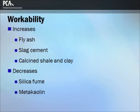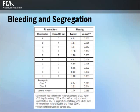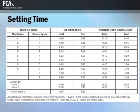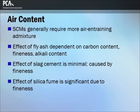Generally, the use of fly ash, slag cement, and calcined clay and shale increase workability, meaning that for a given slump, concrete containing these materials is generally easier to place, consolidate, and finish. Mixtures that contain higher dosages of finer materials such as silica fume can increase the stickiness of a concrete mixture. In general, the finer the supplementary cementitious material, the lower the bleed rate and bleed capacity. The use of SCMs will generally retard the setting time of concrete. Supplementary cementing materials generally require an increase in the amount of air-entraining admixture necessary due to the increase in fineness of the cementitious materials content.